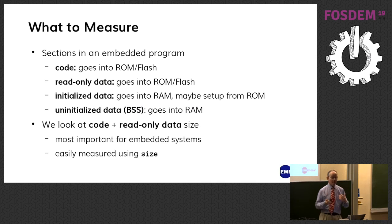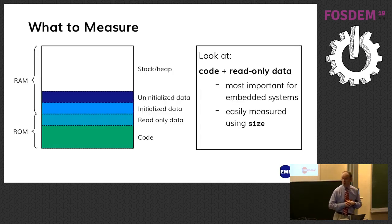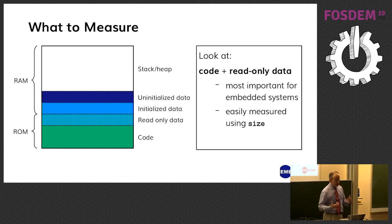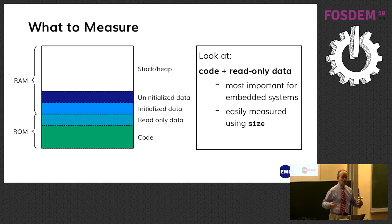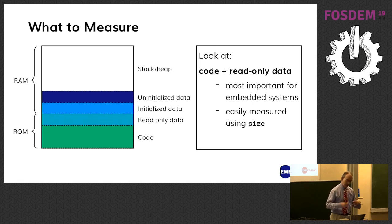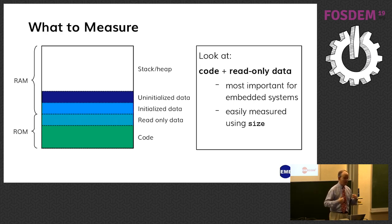So what are we going to measure? In an embedded system, like any program, you've got a mixture of code and read-only data — those always go into ROM or flash. Some initialized data, which is writable, goes into RAM. Uninitialized data, BSS, also goes into RAM. Any RAM left over you'll use for your stack and your heap.